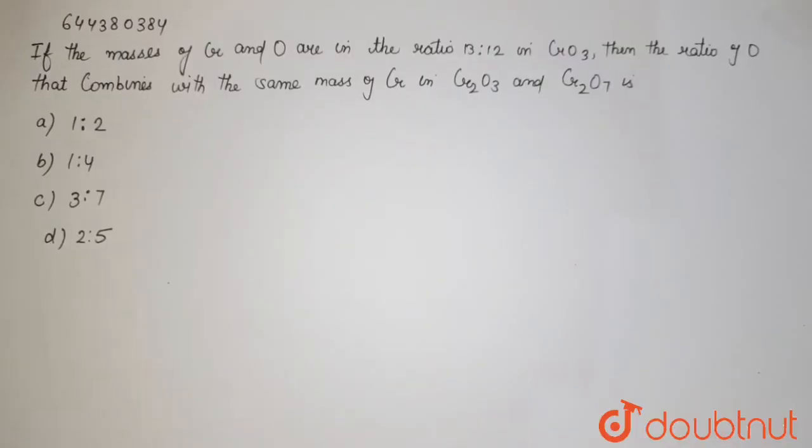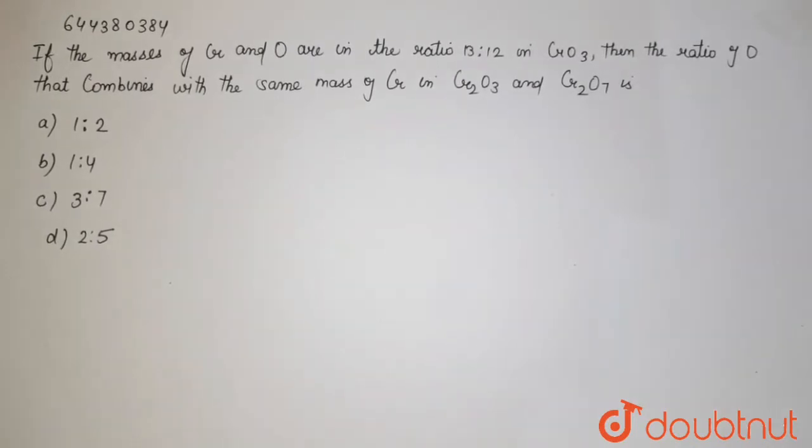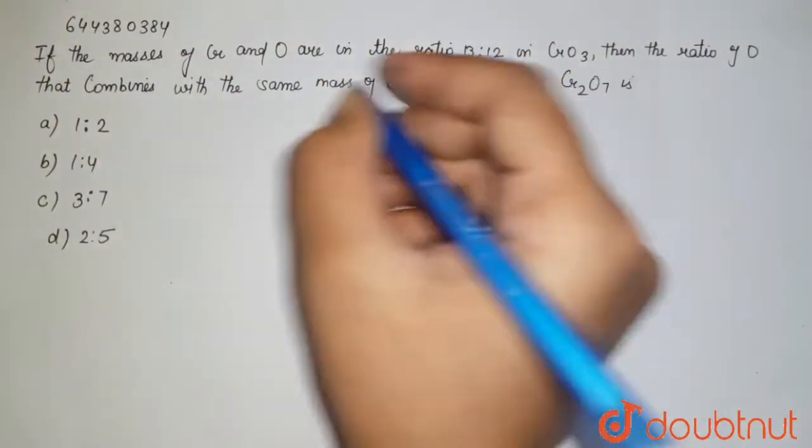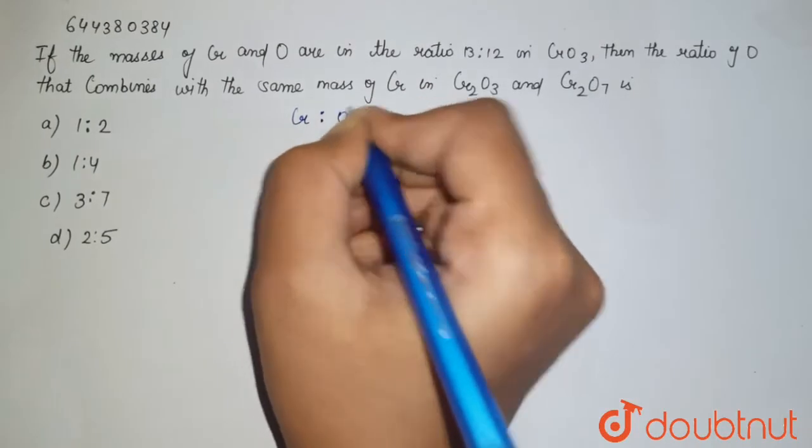are in the ratio 13:12 in CrO3. Then the ratio of oxygen that combines with the same mass of chromium in Cr2O3 and Cr2O7 is... So here we have given chromium to oxygen ratio, that is 13 and 12, that is for